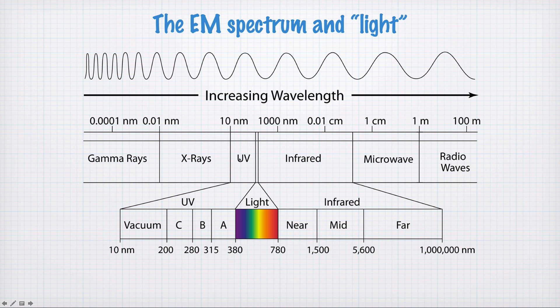Then we get into a regime that would be broadly called optical. So UV, light and infrared. Of these, a very small fraction of the wavelengths we can actually see with the naked eye, from about 380 to 780 nanometers. And that spans the range from purple through to red, all the colors in the rainbow.